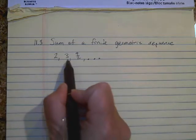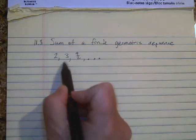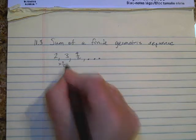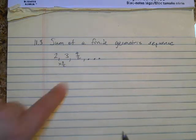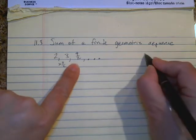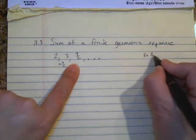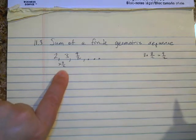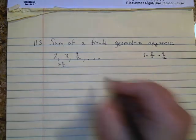So three divided by two is three halves, so the multiplier in this case is three halves. I can check it with the next term - if I take three times three halves I get nine halves. So that means the common ratio is three halves.